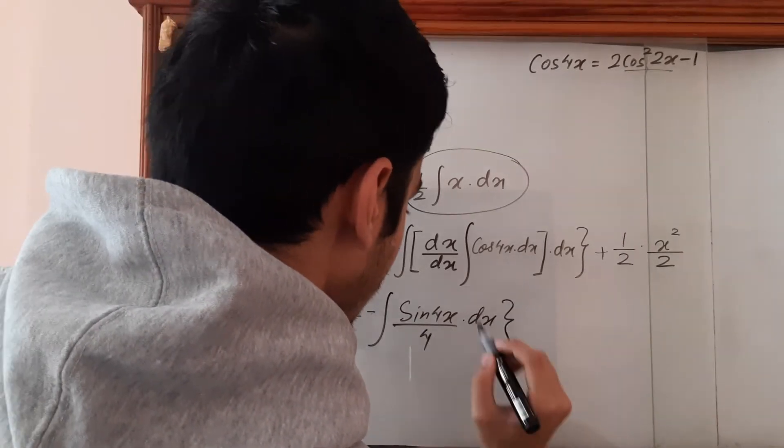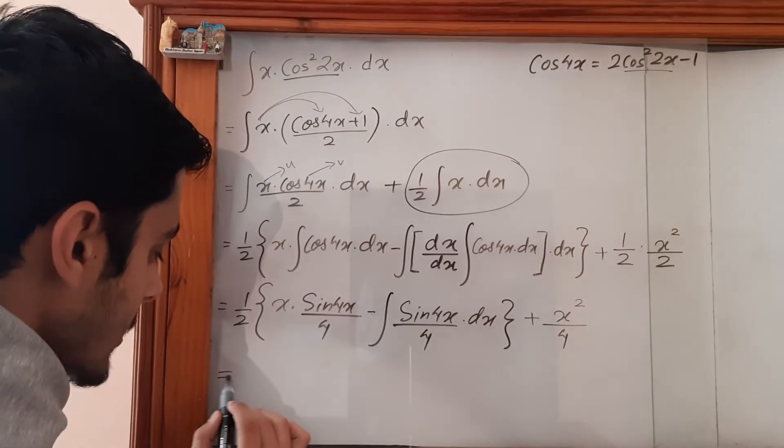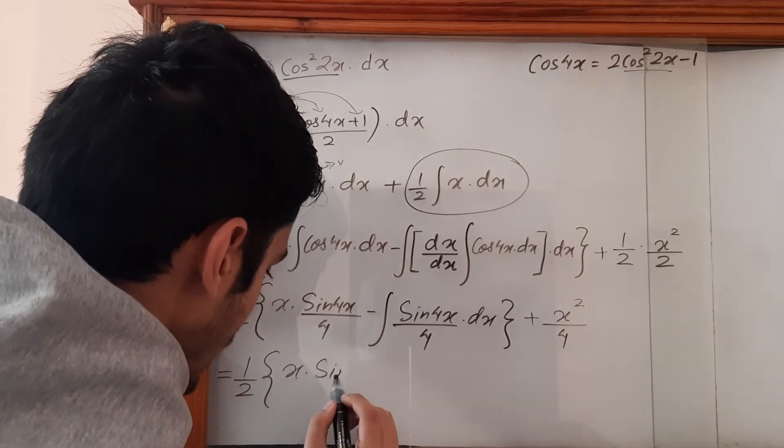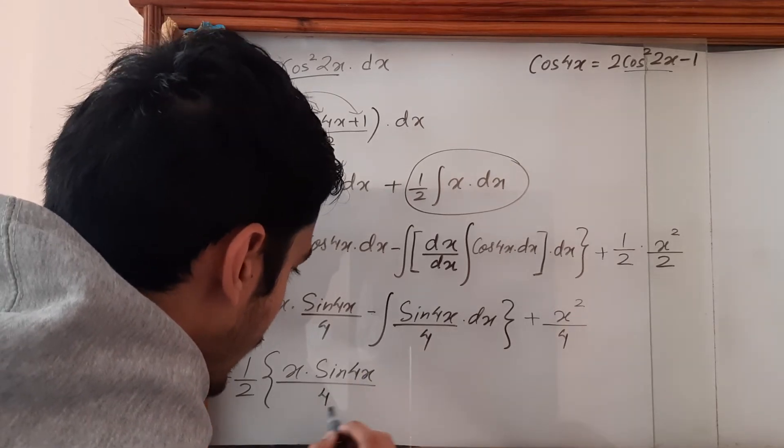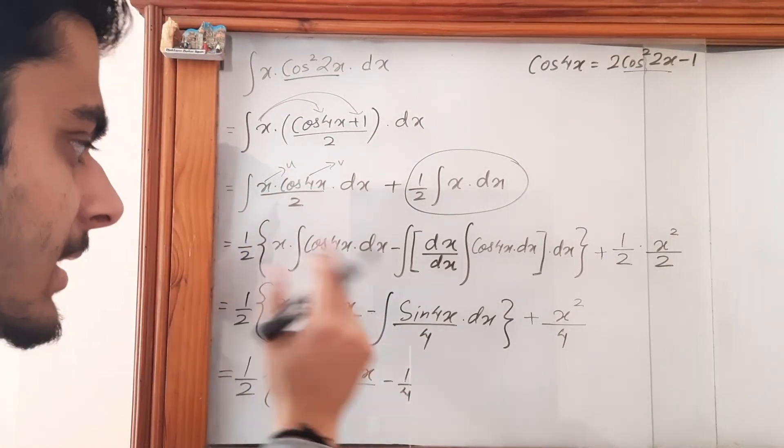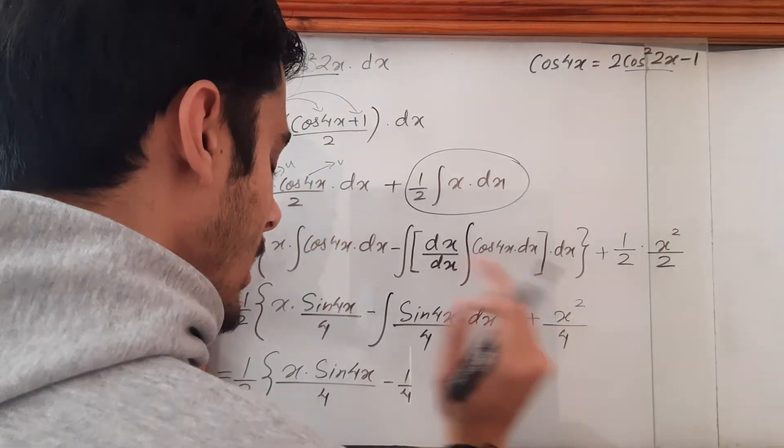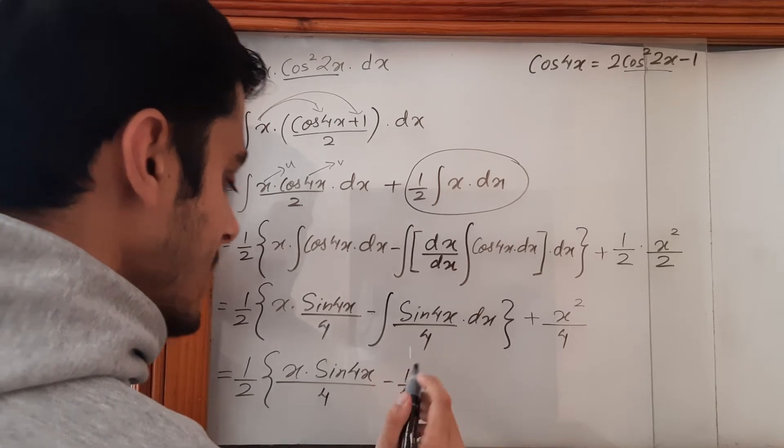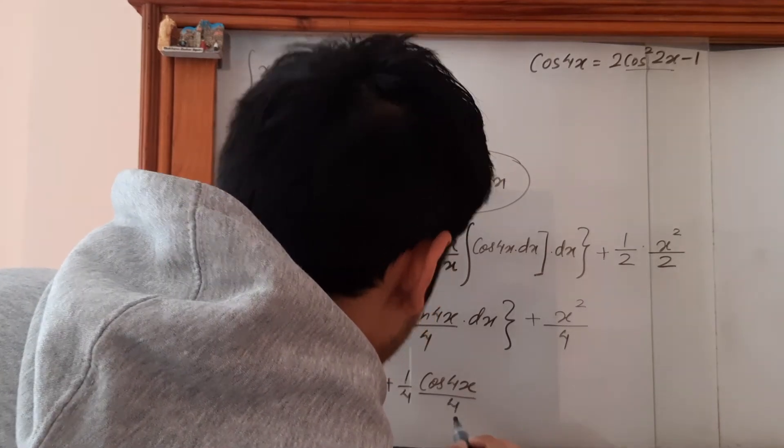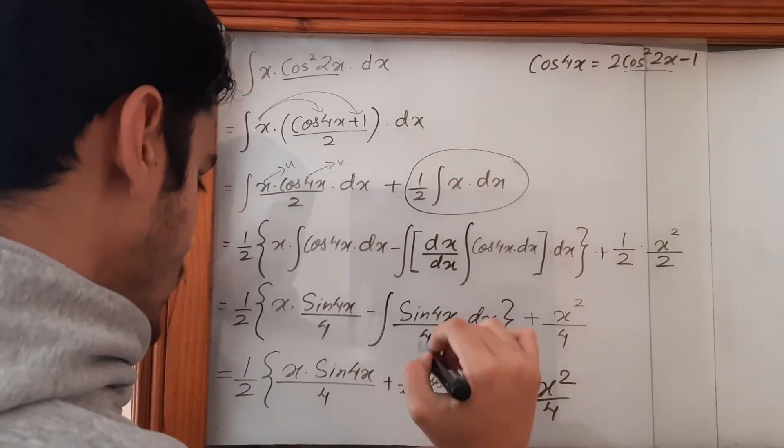This equals 1/2[x·sin(4x)/4 - 1/4∫sin(4x)dx] + x²/4. The 1/4 comes outside, and the integration of sin(4x) is -cos(4x)/4, so that minus times minus becomes plus cos(4x)/4.